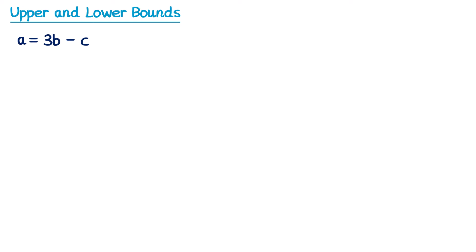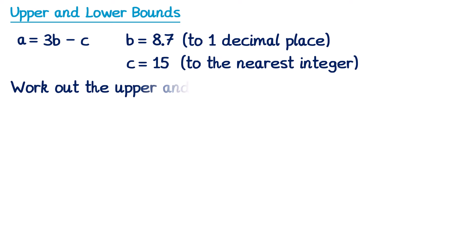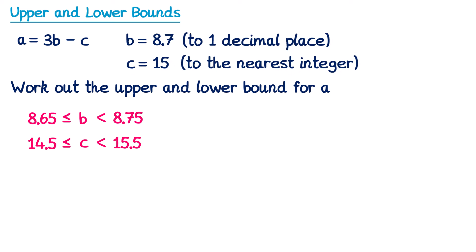It's quite common for upper and lower bounds questions in exams to feature algebra. We have the formula a = 3b − c, where b = 8.7 to one decimal place and c = 15 to the nearest integer. We want to work out the upper and lower bounds for a. We start by writing error intervals for b and c: b must be between 8.65 and 8.75; c must be between 14.5 and 15.5. The formula involves a subtraction, so we need to be careful.